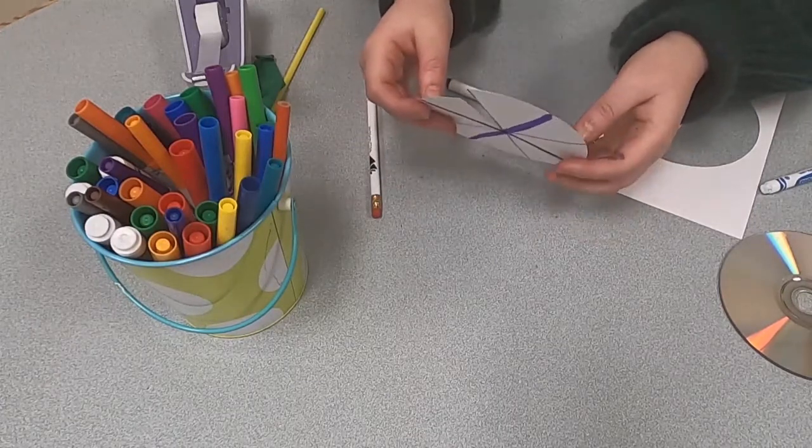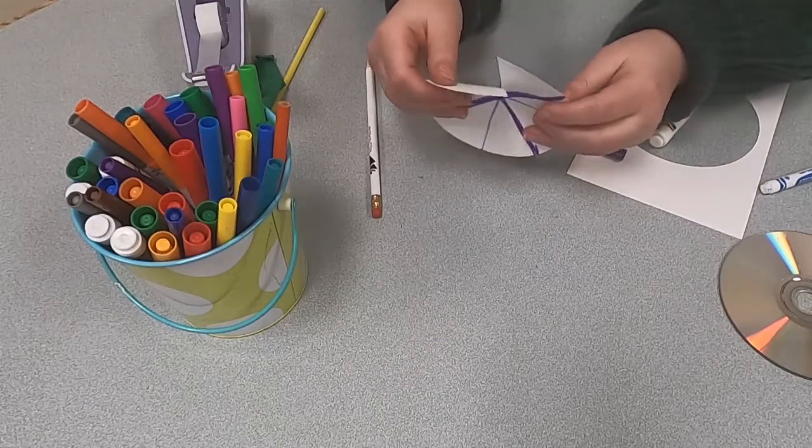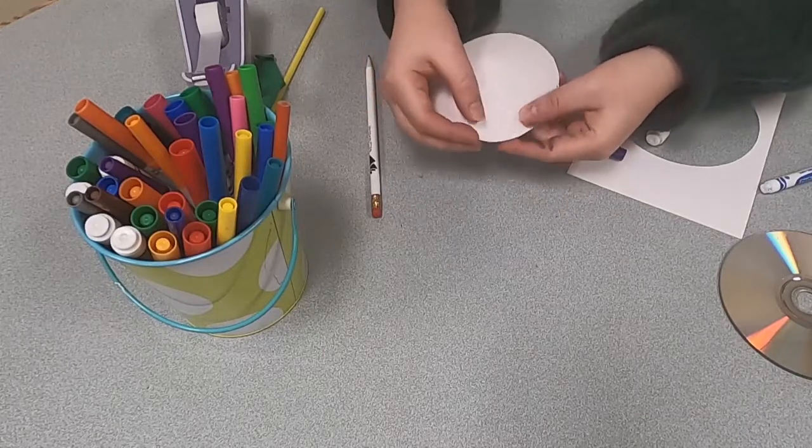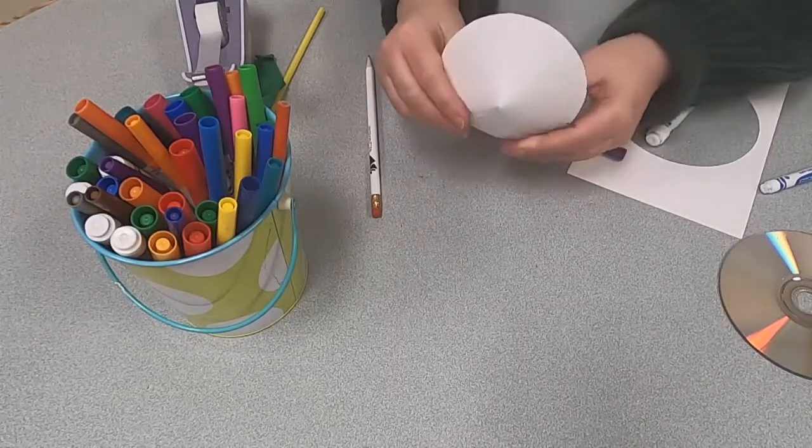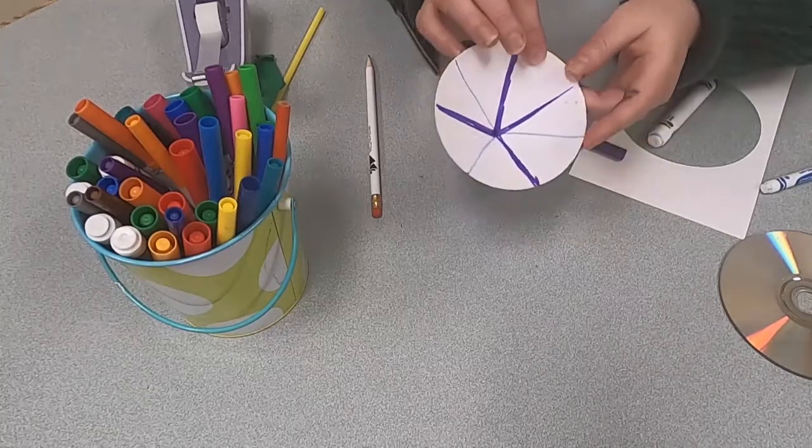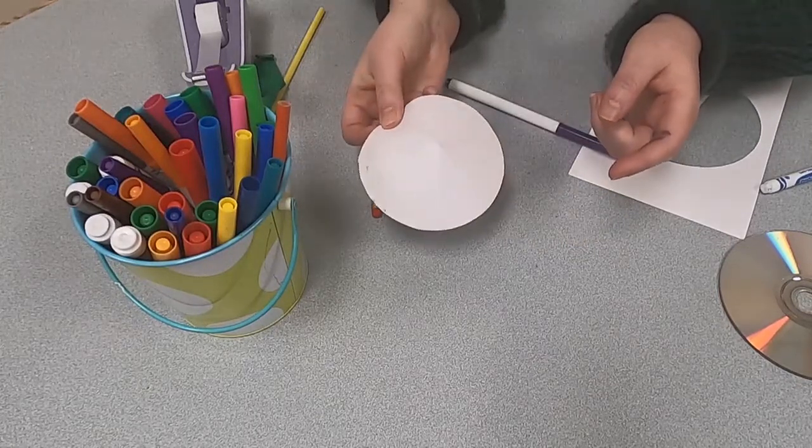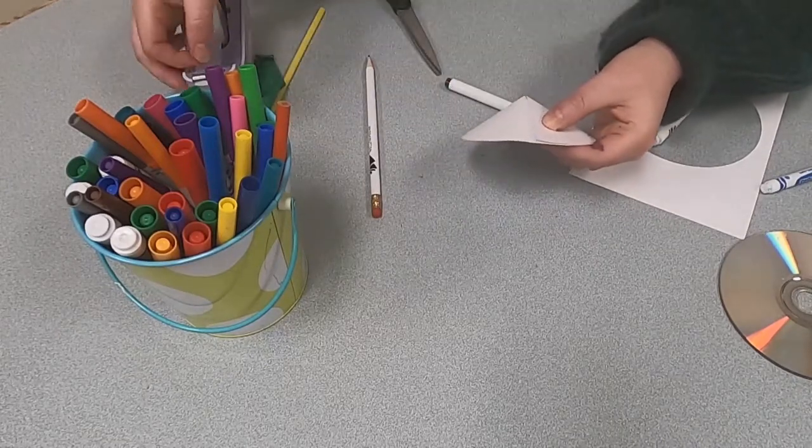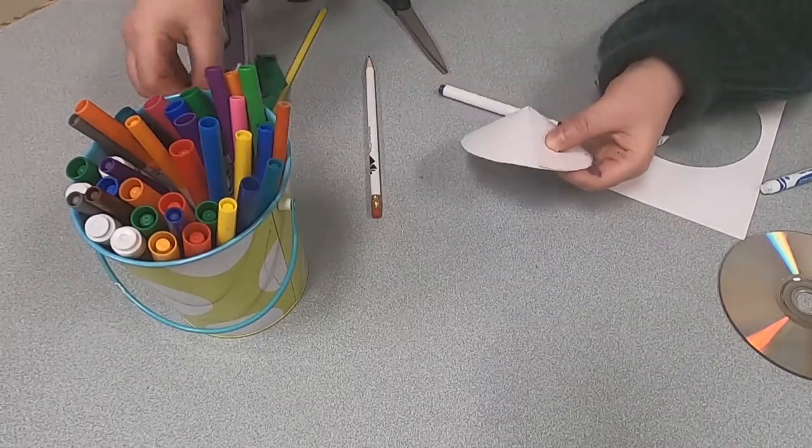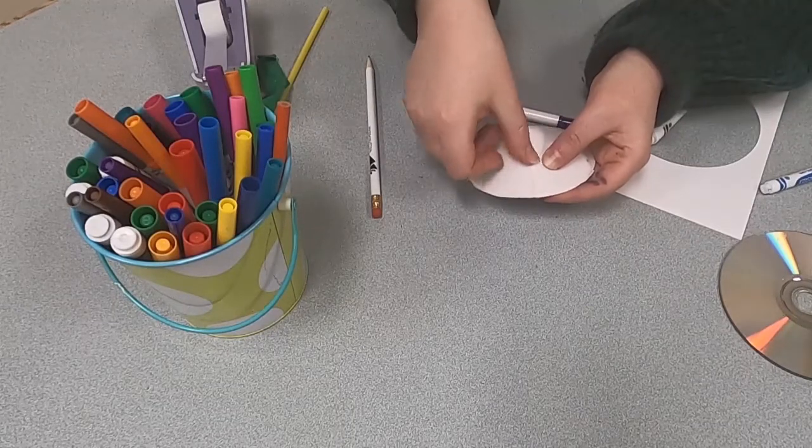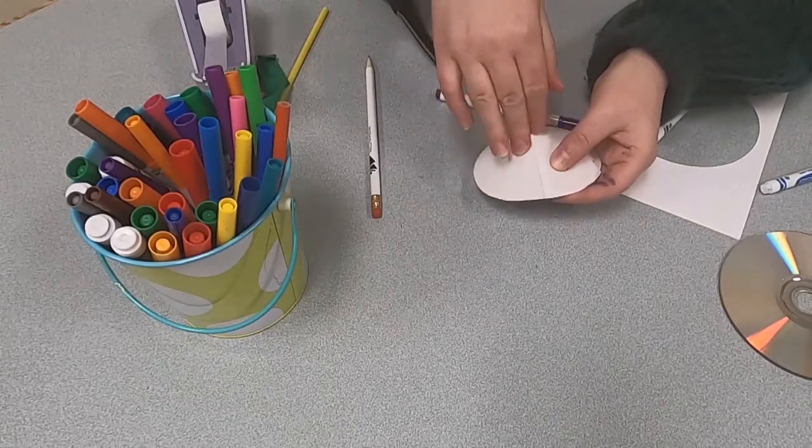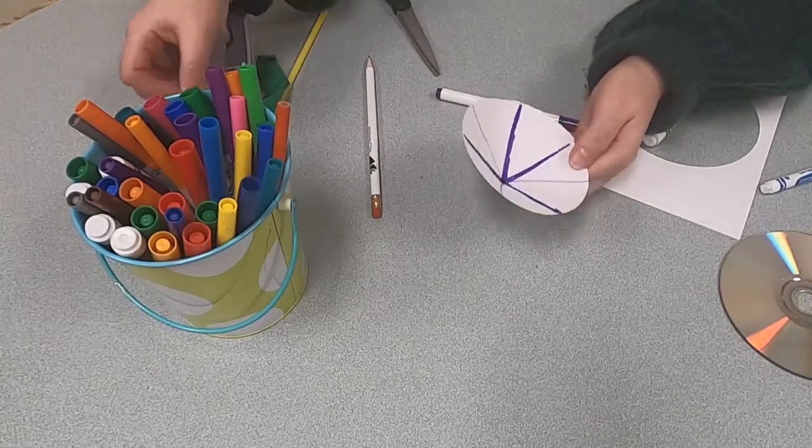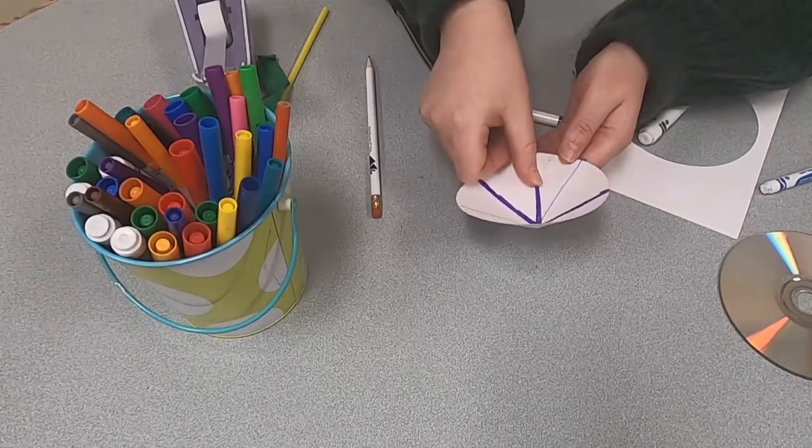We're going to kind of make it into a funnel shape, and this may be a little tricky. What you're going to do is you're going to take one end and fold it under the other like this, and it'll look a little like this. And what we'll do is, once you have that shape, take some tape, take one piece of tape and put it on the outside of the funnel shape, and then we'll take another piece of tape, and just to make sure it's extra secure, and put it on the inside.